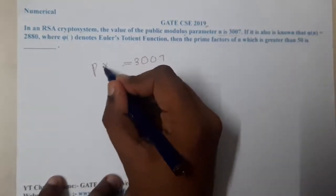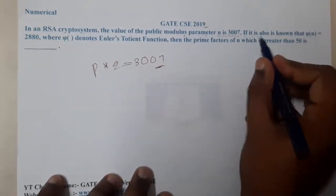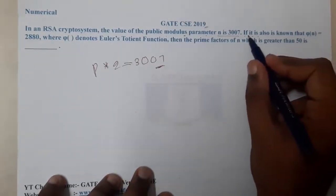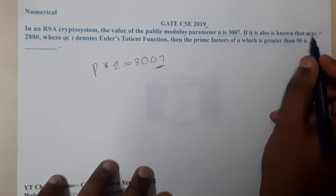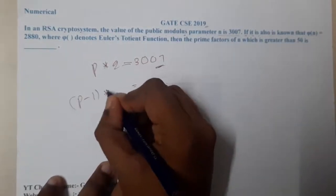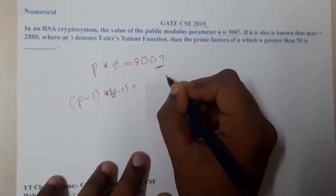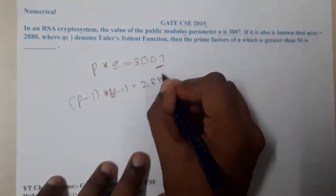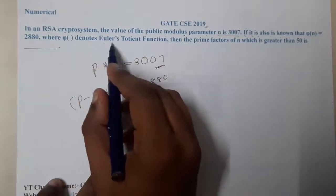It is also known that φ(n), so they even give the φ(n) value, so that is nothing but (p-1) into (q-1), right? So that equals 2880, where φ(n) denotes the Euler's Totient Function.